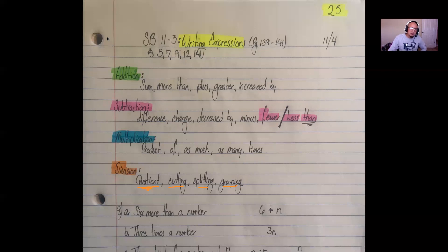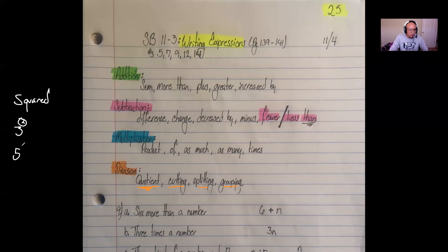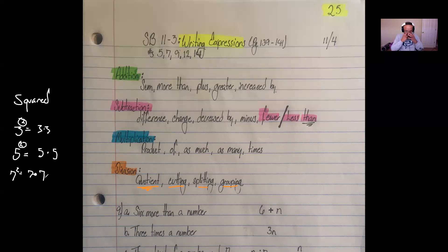Lastly, let's not forget about exponents. The term squared means you raise whatever you're squaring to the power of two. For example, three squared is three to the power of two — that's three times three. Five squared is five times five, and seven squared is seven times seven. There are two of the same number being multiplied together. Cubed is another exponent term, but we can address that more once it comes up.